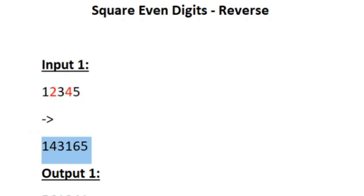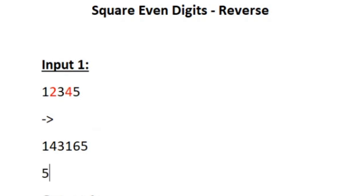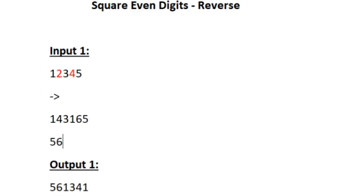Now it is given in the question that after squaring we have to reverse the integer. So this integer when reversed becomes 561341. This is how our integer looks after reversing, and that is our output for sample input 1.